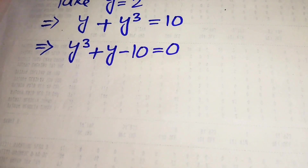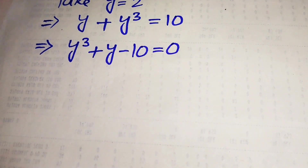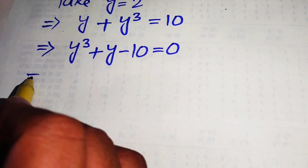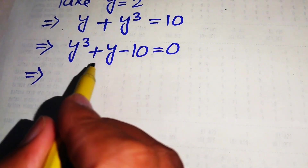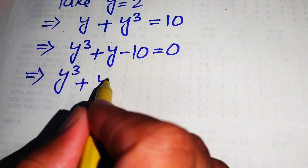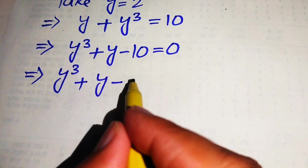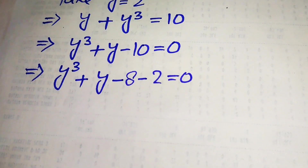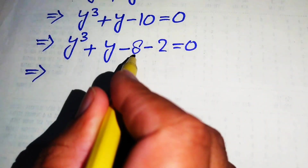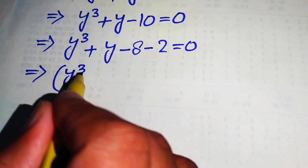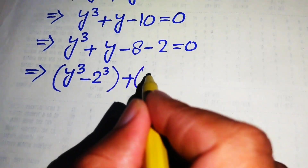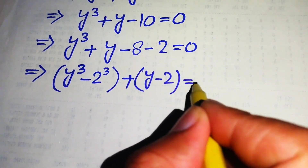In the next step we factor this cubic equation. We have two methods: synthetic division, or directly factoring. To factor directly, we rewrite the equation as y cubed plus y minus 8 minus 2 equals 0, since minus 8 minus 2 equals minus 10. We pair y cubed with minus 8, writing it as y cubed minus 2 cubed, and the remaining terms give us plus y minus 2, all equals 0.